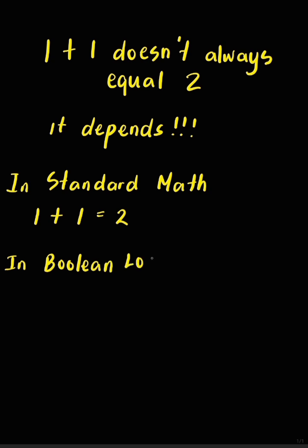But in boolean logic, where one means true and zero means false, one plus one acts like true or true, which still gives true or one, not two.